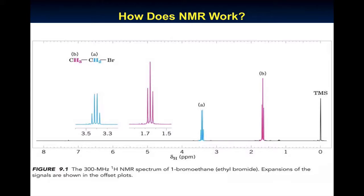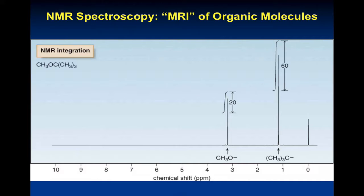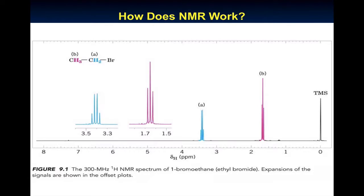What can you tell me about signals A and B in terms of their position? B is at lower PPM, A is at higher PPM. We have upfield and downfield shifts. Signal A has a bromine attached, and those on the previous slide were further downfield with an oxygen attached. Things that are attached to more electronegative atoms typically appear further downfield. Things attached to more electropositive atoms are typically further upfield. We can get a lot of information about what's attached to a proton based on its chemical shift.